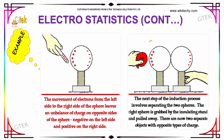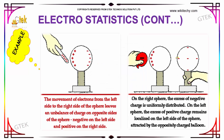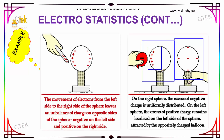The next step of the induction process involves separating the two spheres. The right sphere is grabbed by the insulating stand and pulled away. There are now two separate objects with opposite types of charge. On the right side of the sphere, the excess of negative charge is uniformly distributed. On the left side of the sphere, the excess of positive charge remains localized, attracted by the oppositely charged balloon.